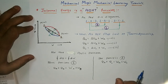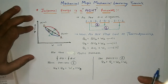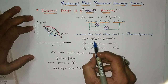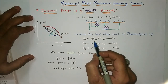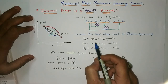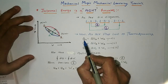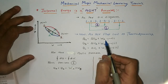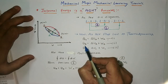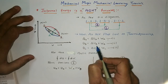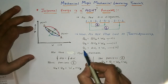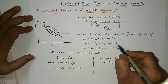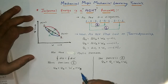Now, as per the first law of thermodynamics, heat supply Q equals work done by the system plus internal energy stored in the system. Applying this: for path a, Q_a = ΔU_a + W_a. For path b, Q_b = ΔU_b + W_b. For path c, Q_c = ΔU_c + W_c. These are equations 1, 2, and 3.